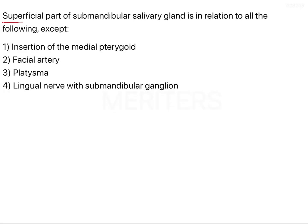The question here is: the superficial part of the submandibular salivary gland is in relation to all of the following except — the options are insertion of the medial pterygoid, facial artery, platysma, and lingual nerve with submandibular ganglia.